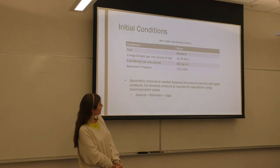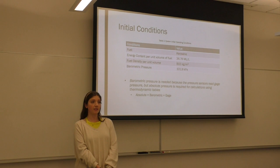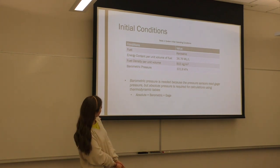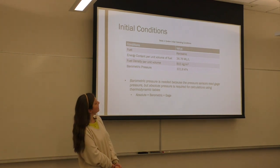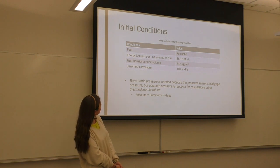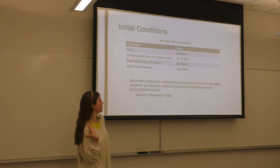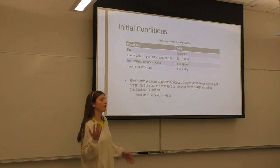So this was our initial conditions. Like I said, we used kerosene as the fuel. The energy content was 36.76 milliliters per liter. The fuel density was 815 kilograms per meters cubed. And the aerometric pressure was 101.9 kPa. And that was necessary for the calculations done using the thermotables.